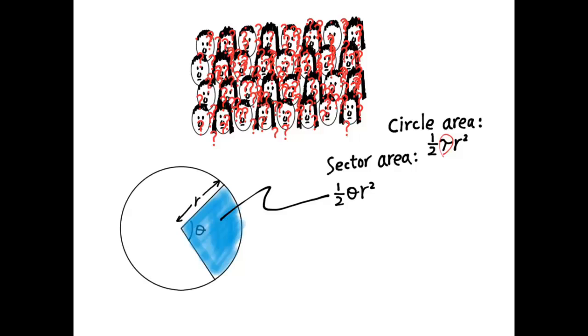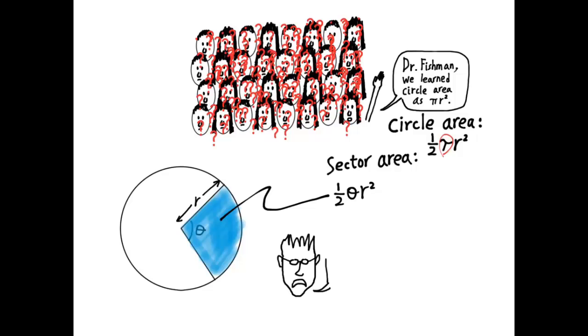I don't understand why that's so hard to remember. Students never remember that. I see a hand, yes? Dr. Fishman, we learned circle area is pi r squared. Oh, okay. So can I have a volunteer to just come explain to the class how you should remember sector area if you like to use pi? Thank you.